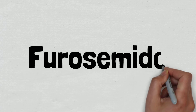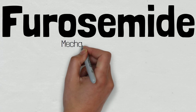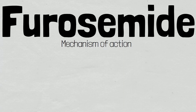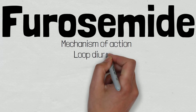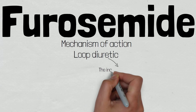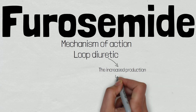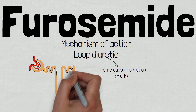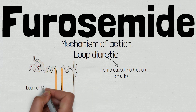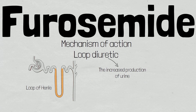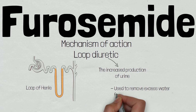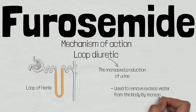Welcome to this video, where we're going to be discussing the mechanism of action of feruzamide. Feruzamide belongs to a group of medications known as loop diuretics. Diuretic means to cause an increased amount of urine, and loop refers to the loop of Henle, which is the target site of feruzamide. Therefore, feruzamide is used to remove excess water from the body by increasing urine output by the kidneys.